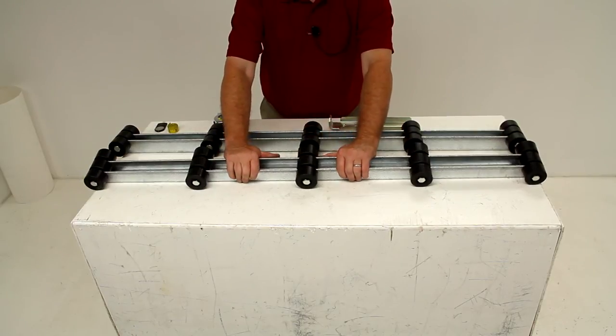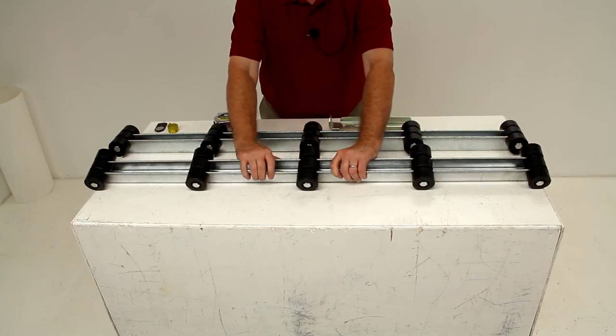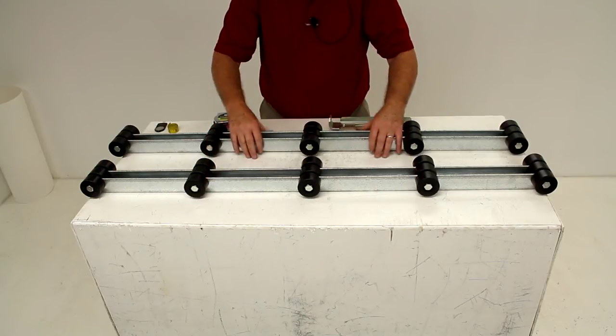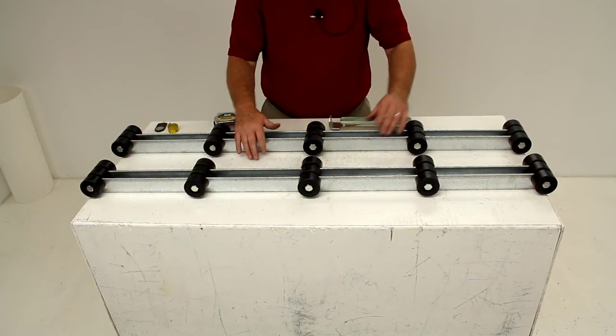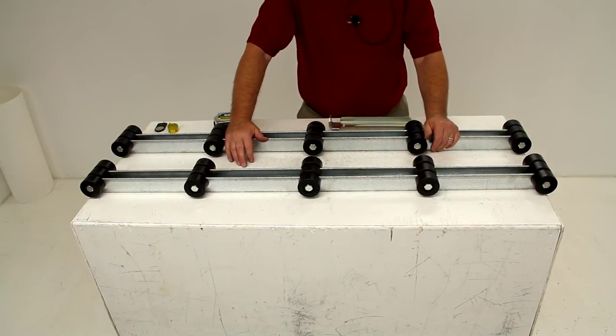This one comes with three rollers on each set, and there are five sets of three rollers on each four-foot length. This part includes two bunks, so you'll be getting a total of ten sets of three rollers.